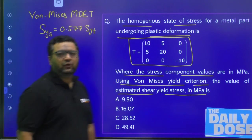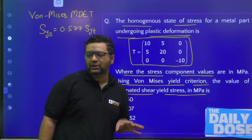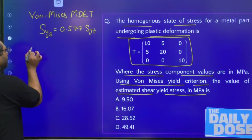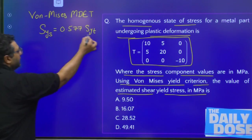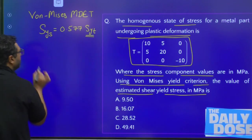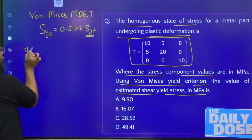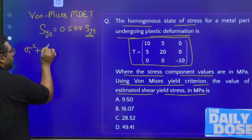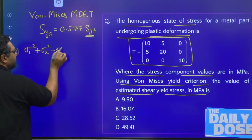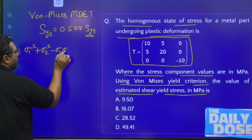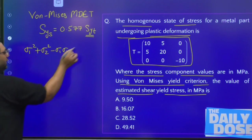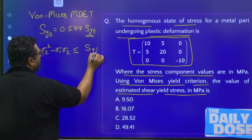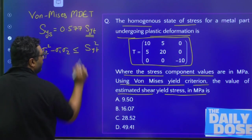We need to find out the yield strength in tension first. The formula for Von Mises in 2D is: σ1² + σ2² − σ1·σ2 ≤ Syt², where Syt is the yield strength in tension. That formula applies for the 2D case.